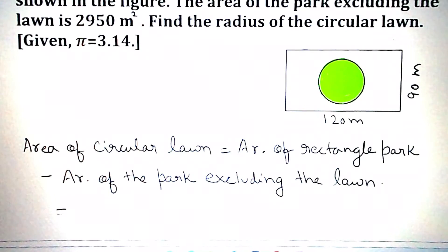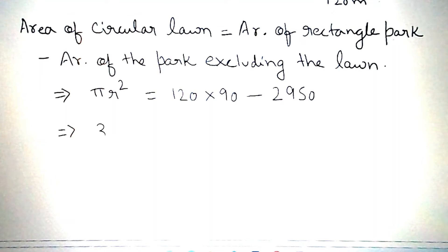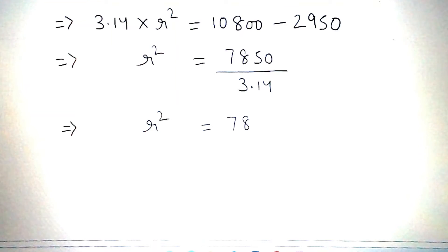That is, area of circle pi r square is equal to area of rectangle, that is 120 into 90 meter, minus area of the park excluding the lawn, that is given as 2950. Value of pi is 3.14, so 3.14 into r square is equal to 10800 minus 2950. On subtracting, we get 7850.